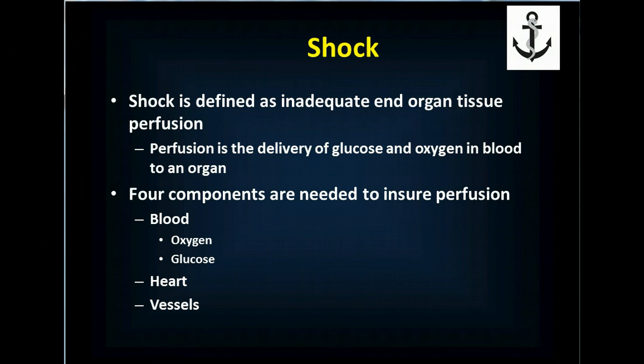There are four components that you need to have intact to ensure perfusion. You need to have blood — volume — and in that you need to have oxygen and glucose. If you don't have enough blood, enough oxygen, or enough glucose, you can't perfuse organs. You need to have a heart as a pumping mechanism to push the blood around, and you need to have vessels to carry the blood.